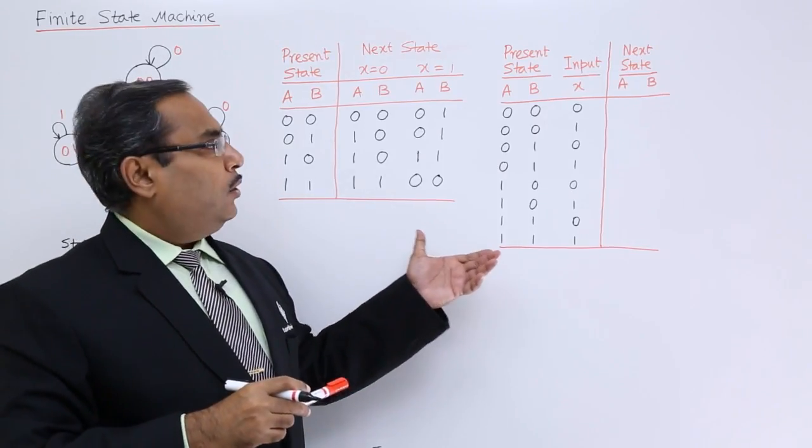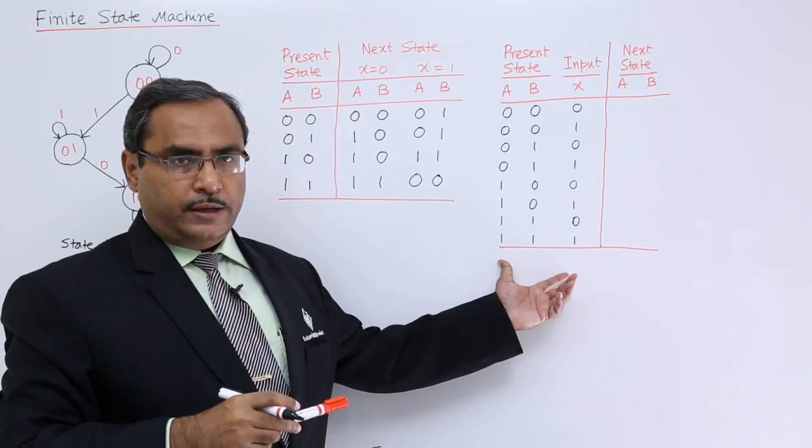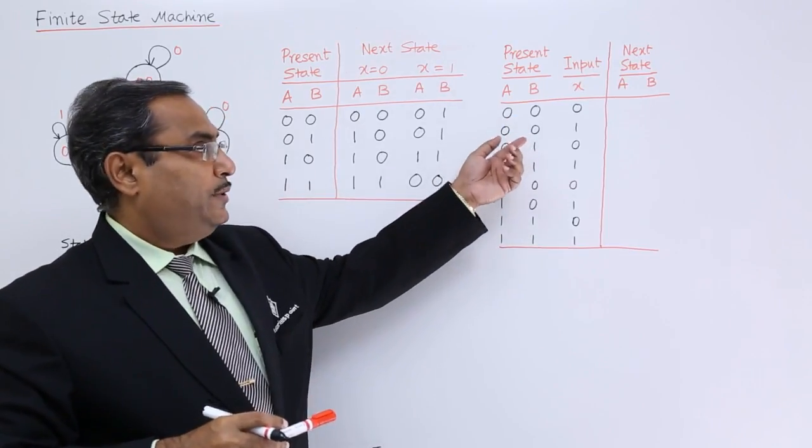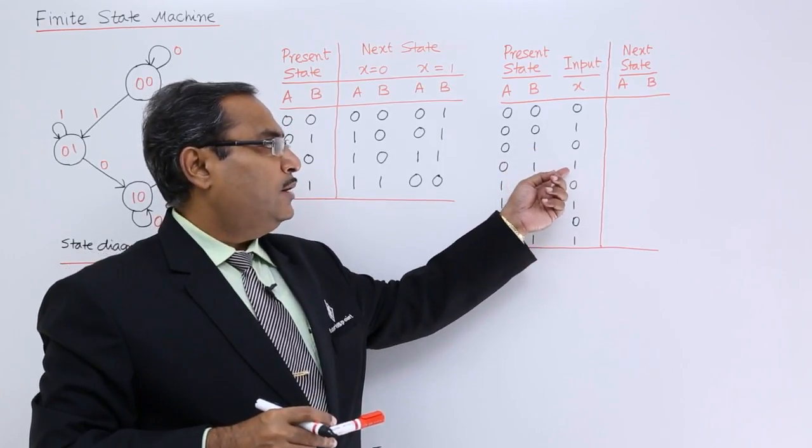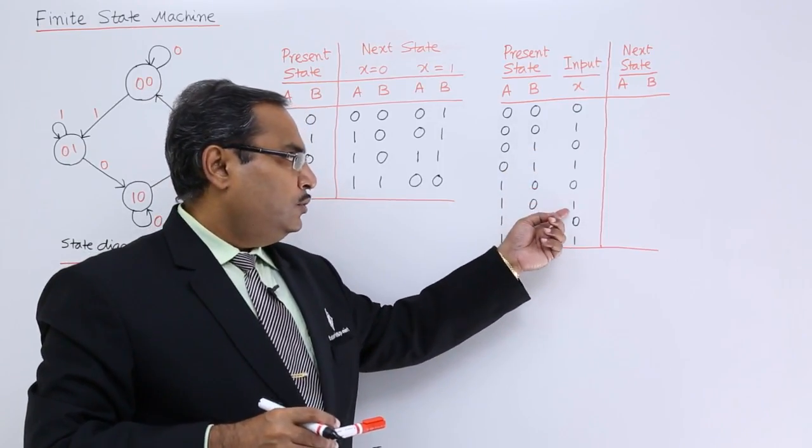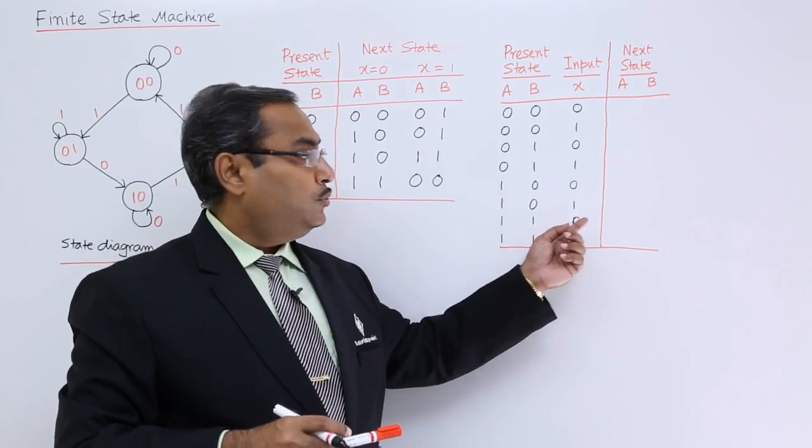This particular table can also be represented in this way. For 0 0 states we are having the input 0 and 1. For 0 1 state we are having the inputs like 0 and 1. For 1 0, two inputs; for 1 1, 0 input and 1 input.